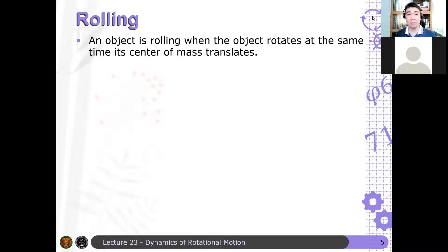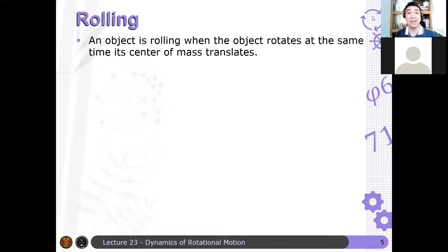First assumption we will consider: rolling is a complicated motion. We will assume that while the center of mass is accelerating, the acceleration is only due to the change in the speed of the center of mass — not due to the object changing its direction. While the center of mass translates, only the speed of the center of mass changes, not its direction.